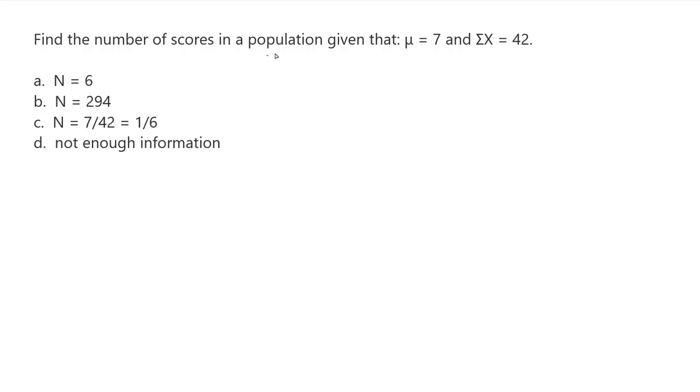Find the number of scores in a population, given that the population mean is 7, and the sum of my x values, the sum of my scores, is equals to 42. So either it's 6, it's 294, it's 7 divided by 42, which gives me 1 over 6 when I reduce that fraction, or I don't have enough information.